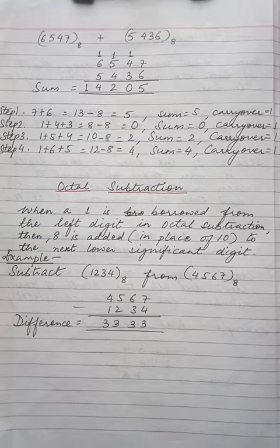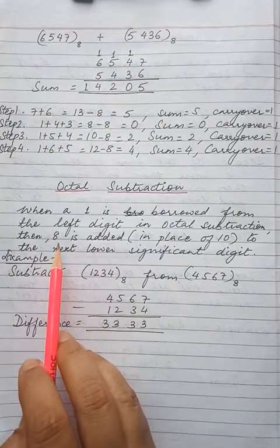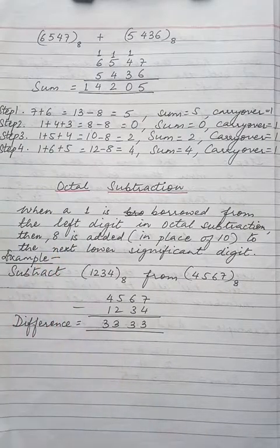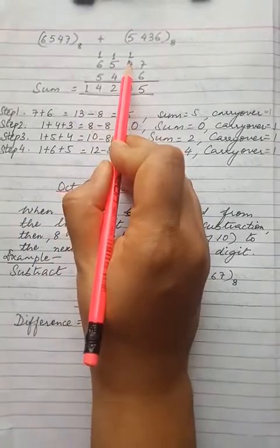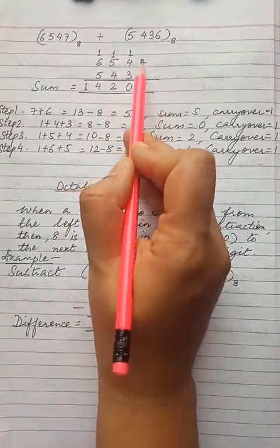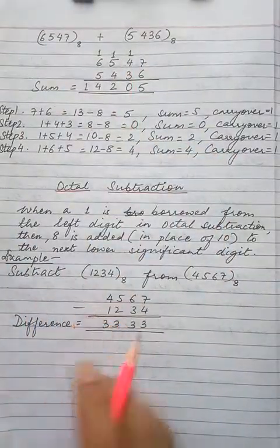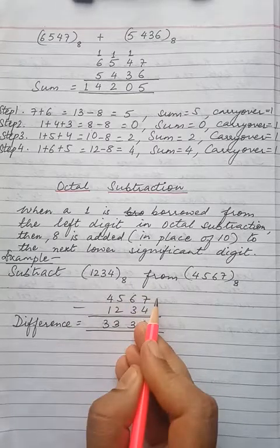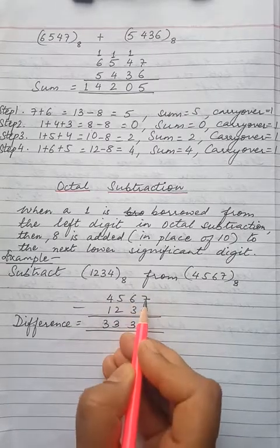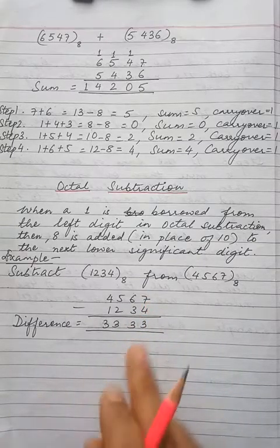Next we come to octal subtraction. When a 1 is borrowed from the left digit in octal subtraction, then 8 is added. Usually in decimal subtraction, when 1 was borrowed from the left-hand side, 10 was added — for example, 10 plus 7 is 17. But now in octal subtraction, when 1 is borrowed from the left-hand side, 8 will be added to this number and then it will be subtracted by the lower digit.